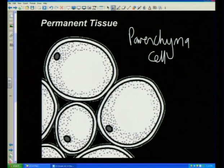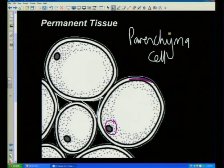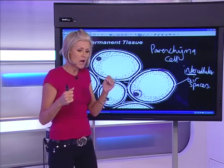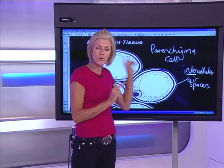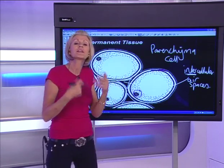Parenchyma cells — look at the nucleus, it's normal size. It's got a relatively good cell wall and cytoplasm. What's very special about these cells is they have huge intercellular air spaces — those big areas between the cells. Those intercellular air spaces mean that water can move through them and gases can move in and out. Also, parenchyma cells store starch — the glucose produced in the leaves gets transported by the phloem to the parenchyma tissue where it gets stored as starch.